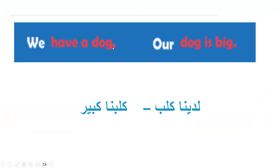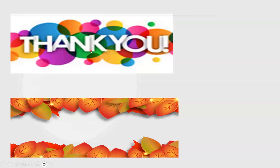We have a dog. Our dog is big. We want to speak about our dog — our dog. If we have something and we want to speak about that thing, we use 'our' to speak about it.